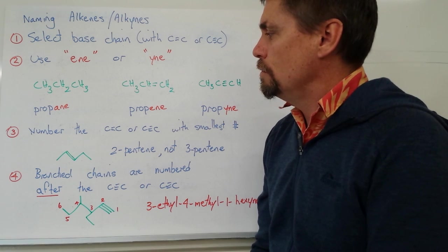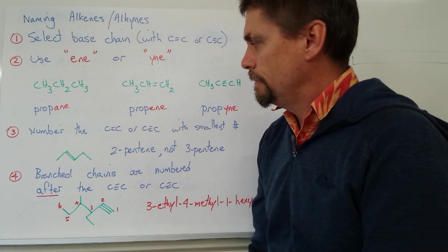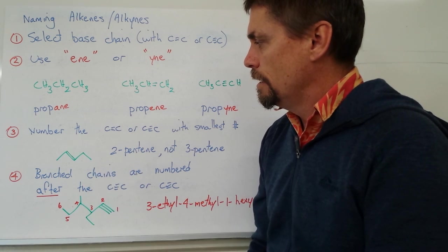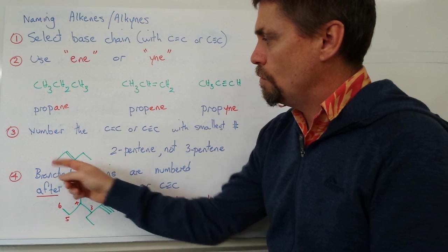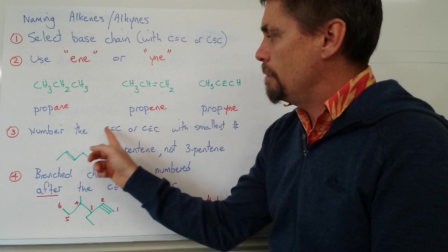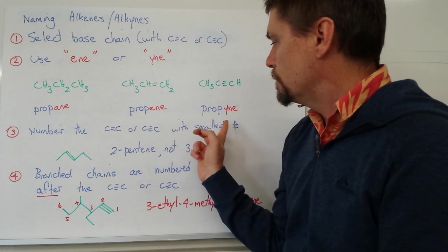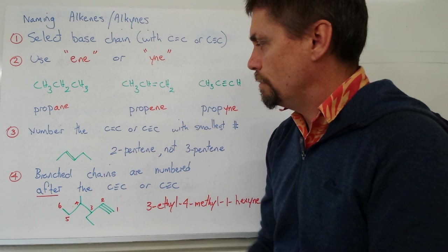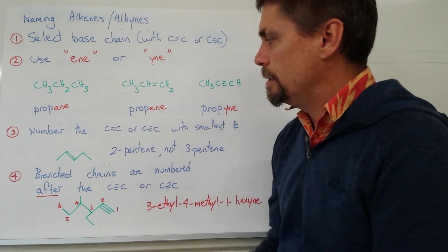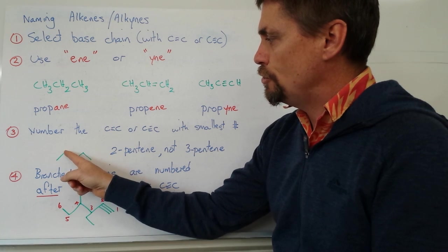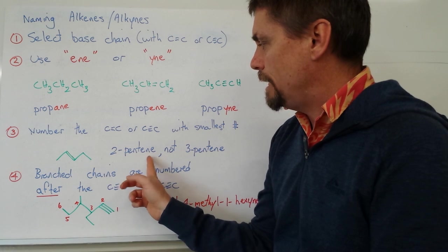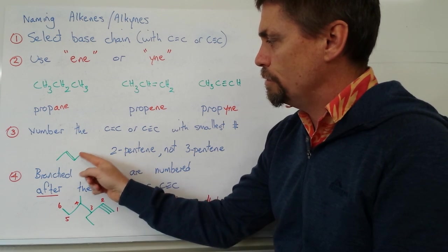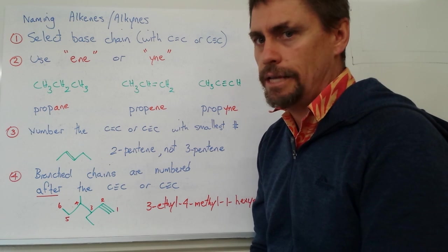What happens if our molecule contains the double bond somewhere that's not terminal? I've done a shorthand version here with carbon numbers 1, 2, 3, 4, and 5. Our rule says that we name the carbon-carbon double bond or triple bond with the smallest carbon number. So looking at carbon number 1, then 2 — our double bond is coming off carbon number 2, so we call it 2-pentene. We don't name it 3-pentene, because that's not the lowest carbon number for that double bond.